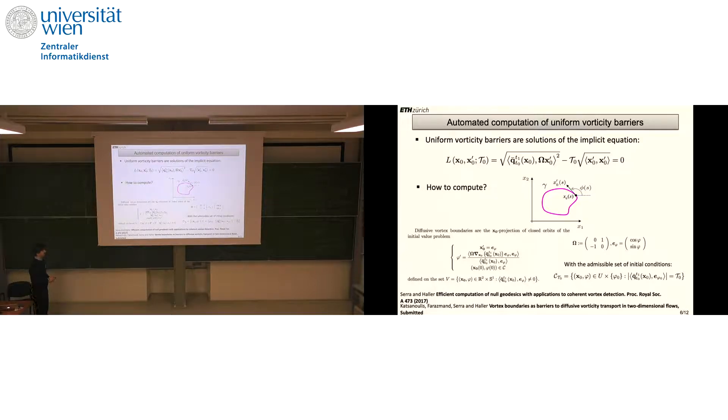After some manipulations involving this expression, one can prove this theorem: diffusive vortex boundaries are the x₀ projection of closed orbits of this initial value problem. Special care should be taken defining the admissible set of initial conditions, but this can be done using a geometric argument. This algorithm allows for automatic extraction of diffusive vortex boundaries without threshold parameters that many Lagrangian coherent structure extraction algorithms have.